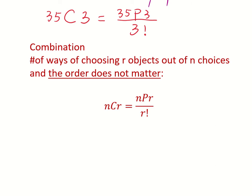Let's make it more official. A combination is an operation to find the number of ways of choosing R objects out of N choices where the order does not matter. Choosing R out of N choices for combination is written as NCR. You can calculate it by using NPR to divide R factorial.